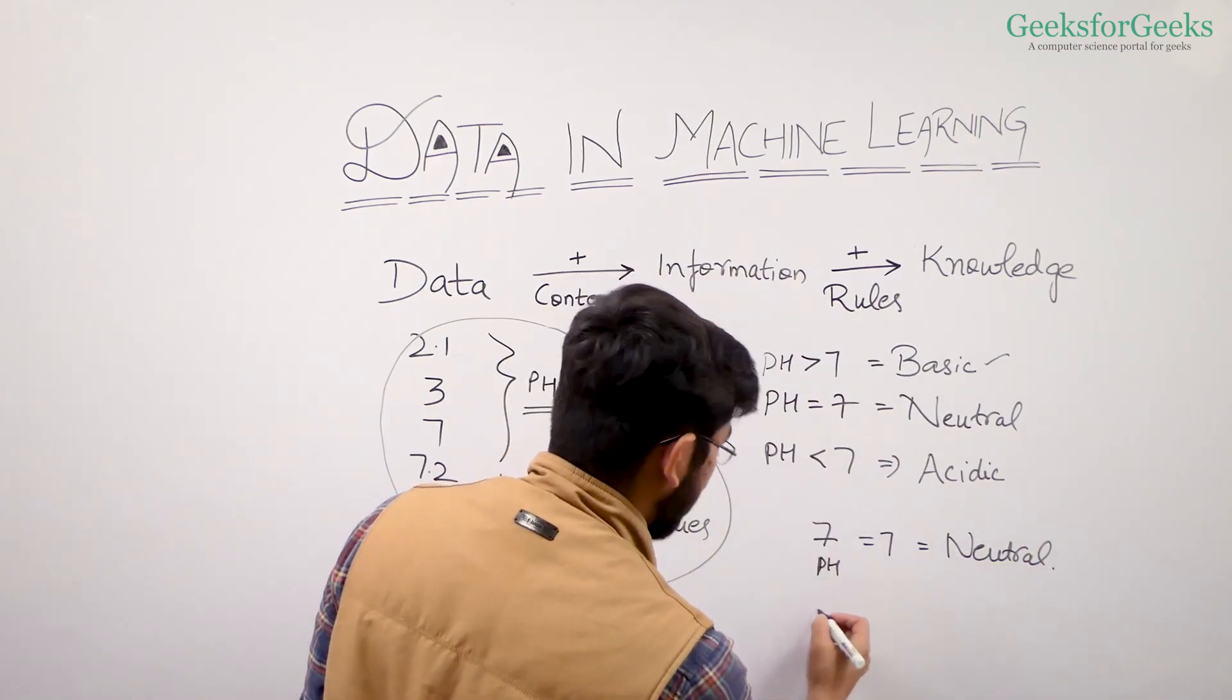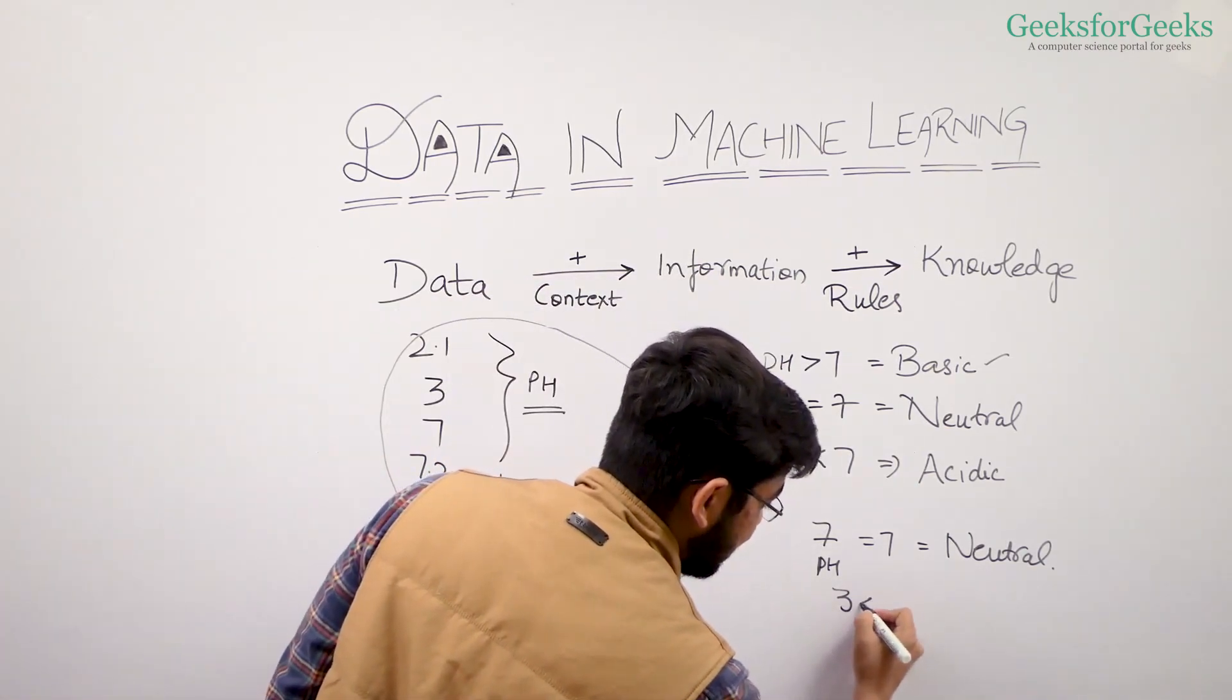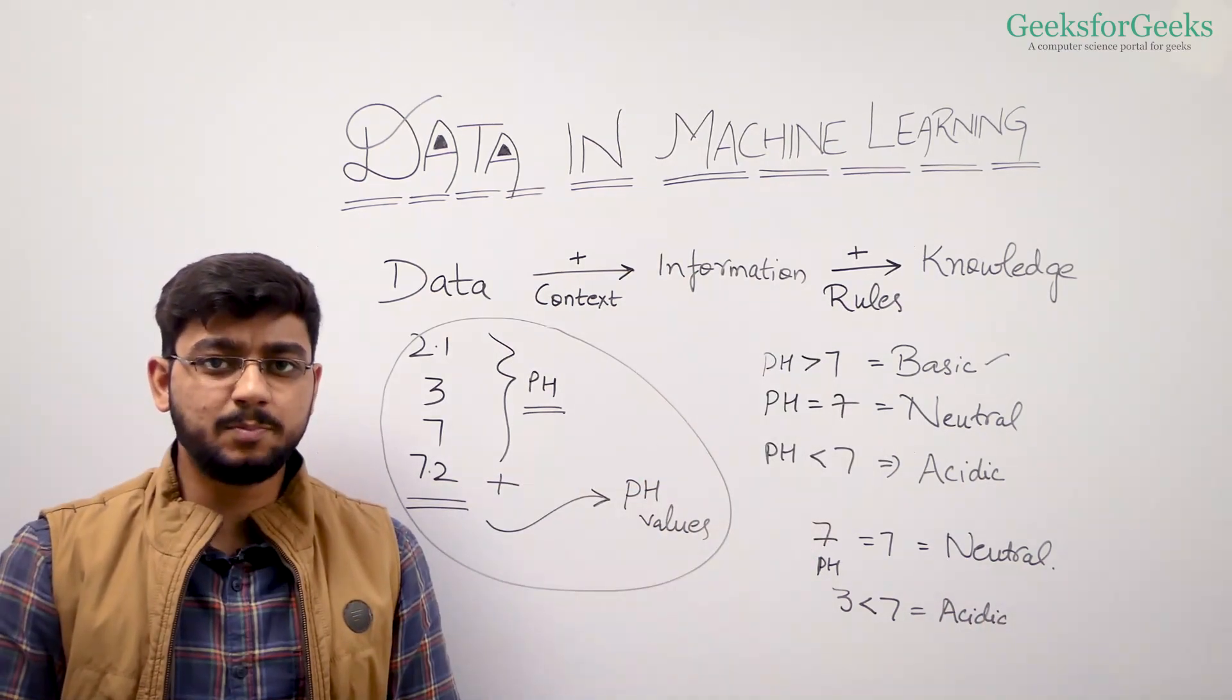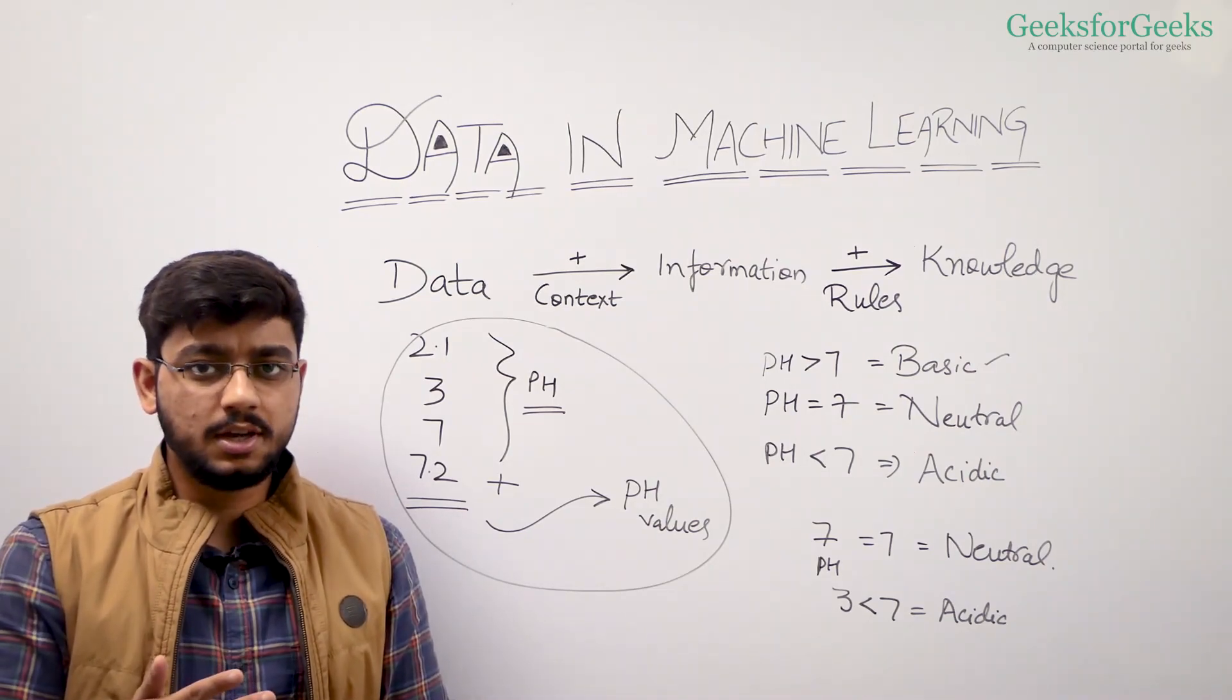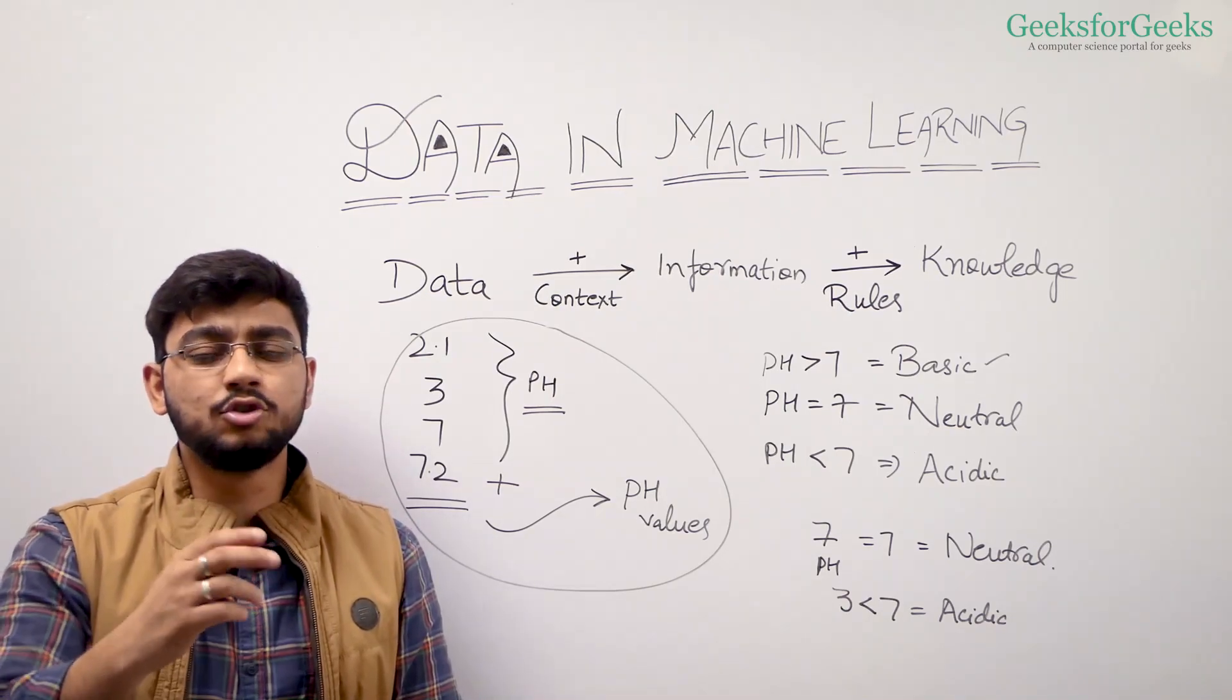Similarly, if we were given 3, so 3 is less than 7, that means it is acidic. That's the clear difference between these three terms: data, information, knowledge. Data plus context is information. Information plus rules is knowledge. Now we'll be talking about types of data.